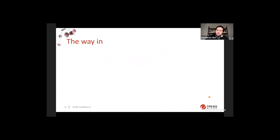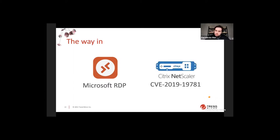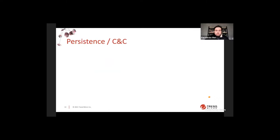We spotted two different vulnerabilities they exploit for initial access. The first is not really a vulnerability — it's RDP brute force, also spotted in JS Worm ransomware campaigns, though JS Worm was previously distributed via phishing, exploit kits, and botnets. Nephilim is more selective. They use Microsoft RDP brute force and also exploit a vulnerability in Citrix NetScaler, also known as ADC, as their way in.